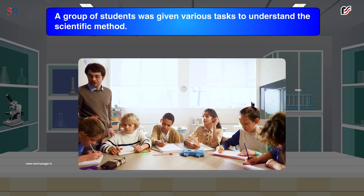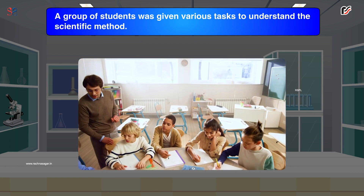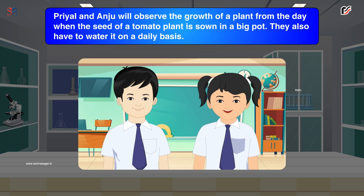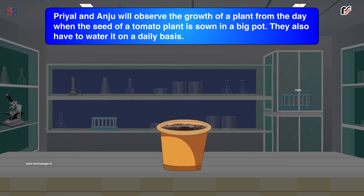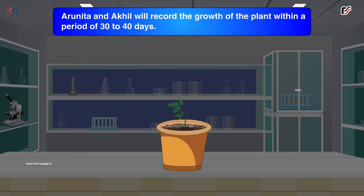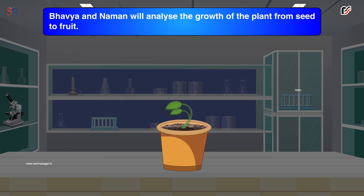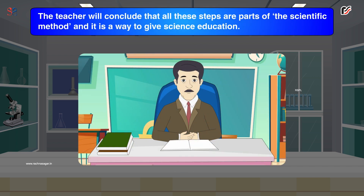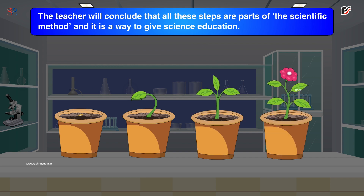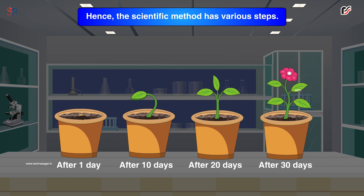Activity 1: A group of students was given various tasks to understand the scientific method. Pryal and Anju will observe the growth of a plant from the day when the seed of a tomato plant is sown in a big pot, and water it on a daily basis. Arunita and Akhil will record the growth of the plant within a period of 30–40 days. Bhavya and Naman will analyze the growth of the plant from seed to fruit. The teacher will conclude that all these steps are parts of the scientific method.